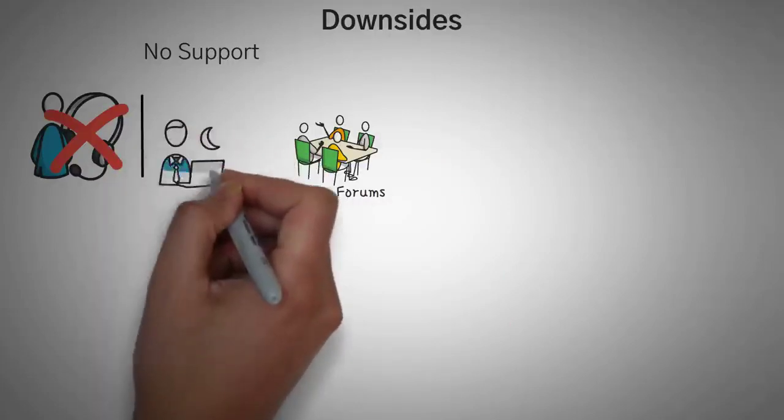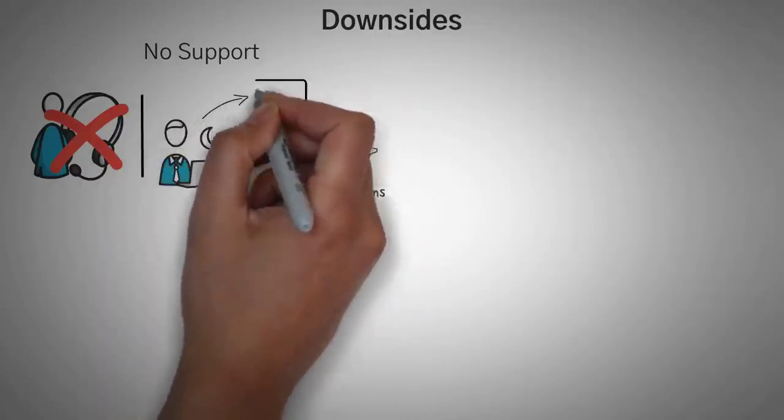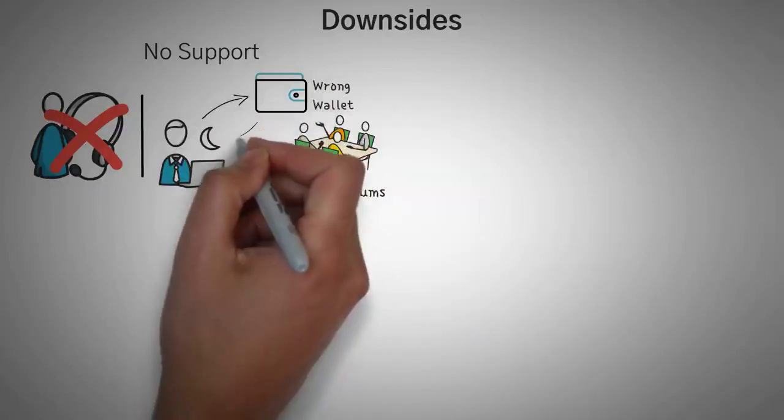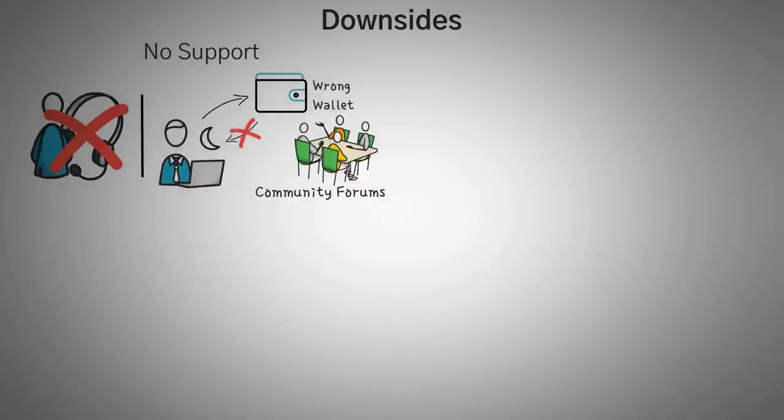This means if you do something wrong and you send your coins to a different address, or maybe you buy a scam coin that looks similar to a true coin, it's going to be your fault, and you'll probably never get them back. So you've got to be very careful what you do on a DEX.